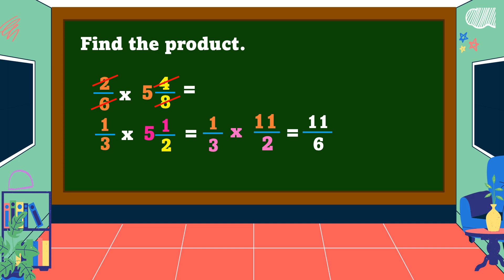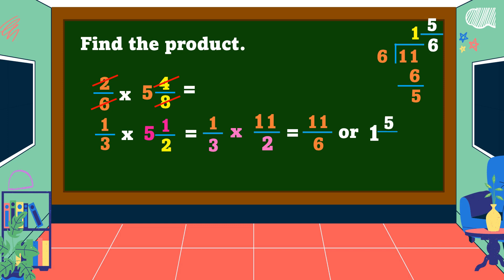How do we reduce an improper fraction to its lowest term? Divide the numerator by the denominator: eleven divided by six equals one, one times six equals six, eleven minus six equals five. Take the remainder as the numerator and the divisor as the denominator. Therefore, the final answer is one and five-sixths.